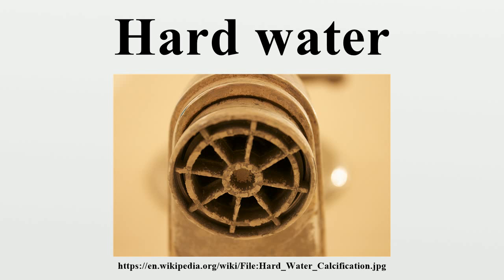Where softening is practiced, it is often recommended to soften only the water sent to domestic hot water systems so as to prevent or delay inefficiencies and damage due to scale formation in water heaters. A common method for water softening involves the use of ion exchange resins, which replace ions like Ca²⁺ by twice the number of monovalent cations such as sodium or potassium ions. Washing soda has long been used as a water softener for domestic laundry, in conjunction with the usual soap or detergent.